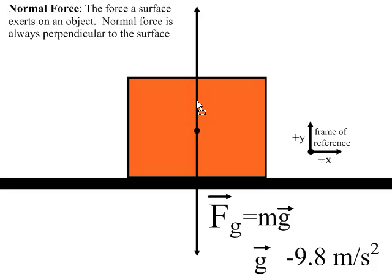That's the force of the surface pushing up on the object. In the case of a level surface, this force is going to be equal in size and opposite in direction to the force of gravity, and this force is called the normal force.